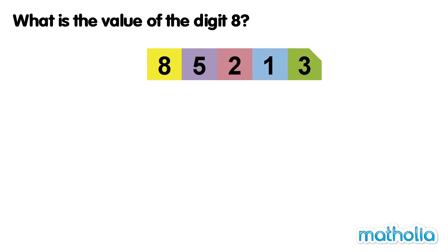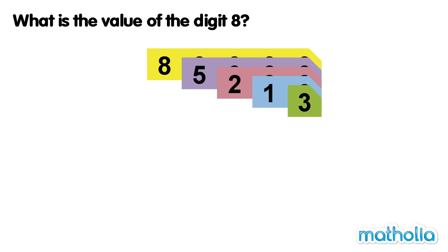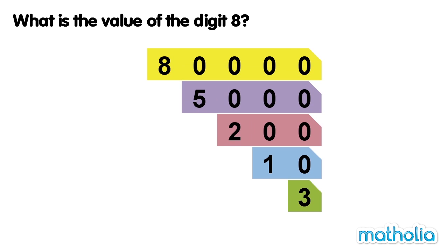What is the value of the digit 8? Place value cards have been used to make the number 85213. Let's find the value of the digit 8. Let's separate the number into its different place value cards. We can see that digit 8 has a value of 80000.